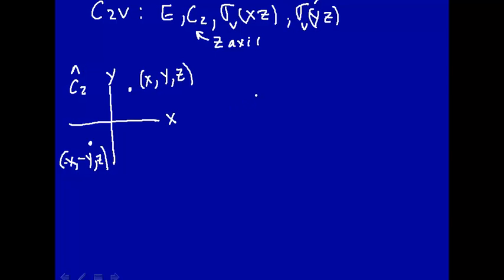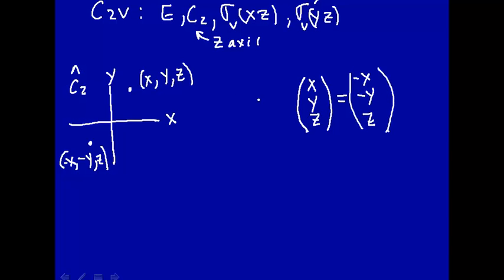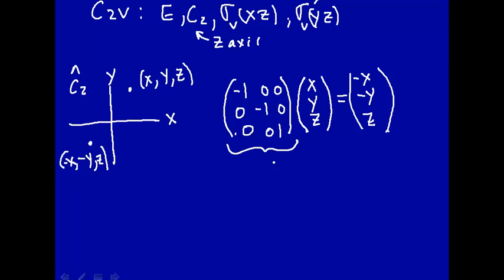The coordinates of this point after the C2 rotation are minus X, minus Y, and Z. Since we're rotating around Z, the Z coordinate doesn't change, but X goes to minus X and Y goes to minus Y. We want a matrix that multiplies the vector (X, Y, Z) and transforms it into (minus X, minus Y, Z). That matrix has minus 1, 0, 0 in the first row; 0, minus 1, 0 in the second; and 0, 0, 1 in the third. This is the matrix representation of the C2 operator.